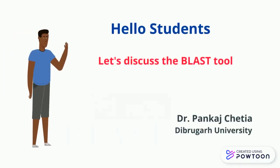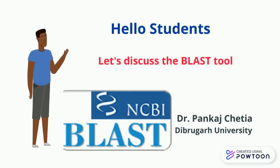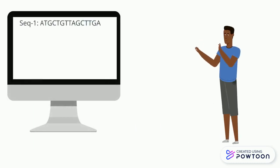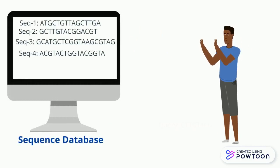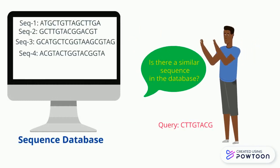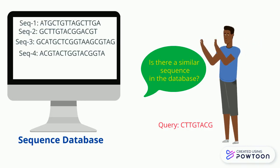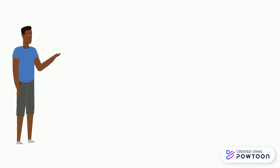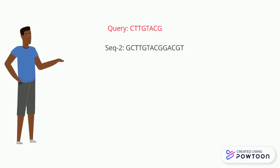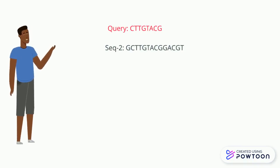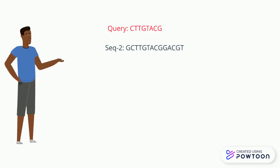Let's discuss the BLAST tool today — that is Basic Local Alignment Search Tool, maintained by NCBI. In BLAST, we try to align an unknown nucleotide or amino acid sequence against nucleotide or amino acid sequence databases to search for similar sequences. BLAST will tell you if there is a similar sequence in the database, what the similarity score is, and what the e-value is.